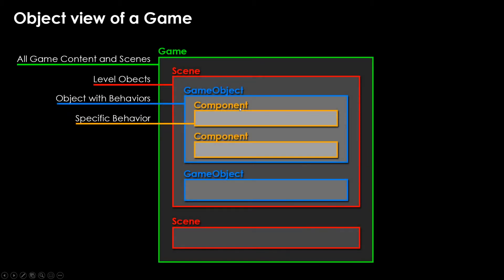First, we're going to talk about how everything is organized inside of Unity in regards to scenes, objects, scripts, and all of that stuff. Because once you understand how everything is organized, you're going to get a better sense for how to connect one thing to another or where to look to find something. This is a complex graph that I thought would be useful to show you a macro-level view of everything in our game.